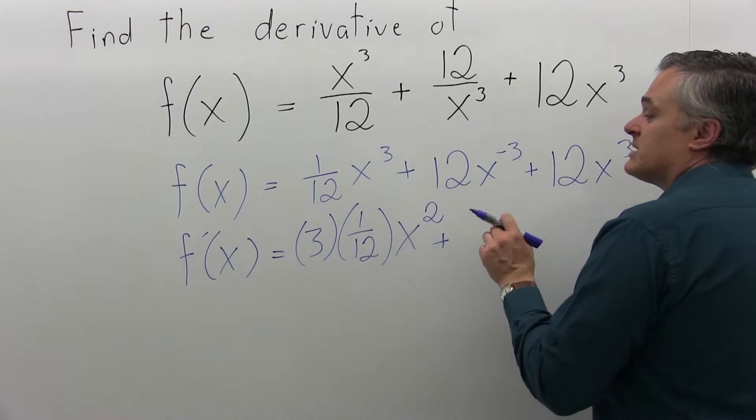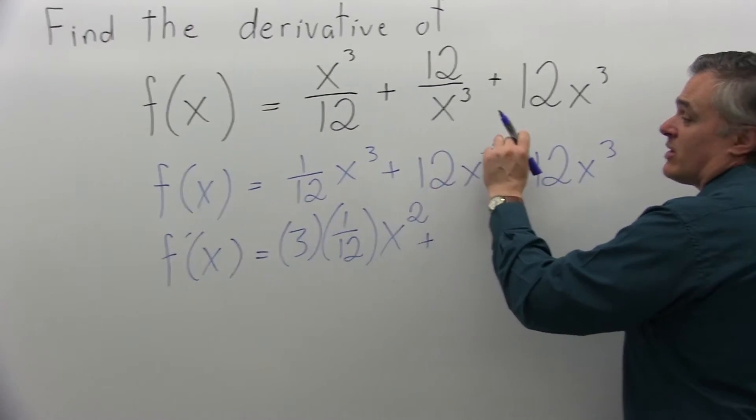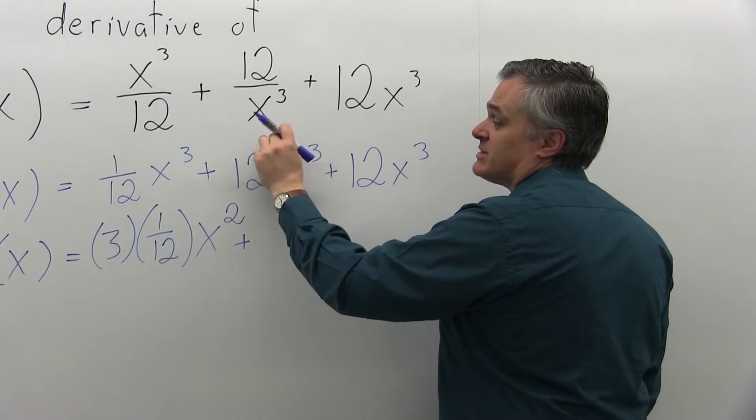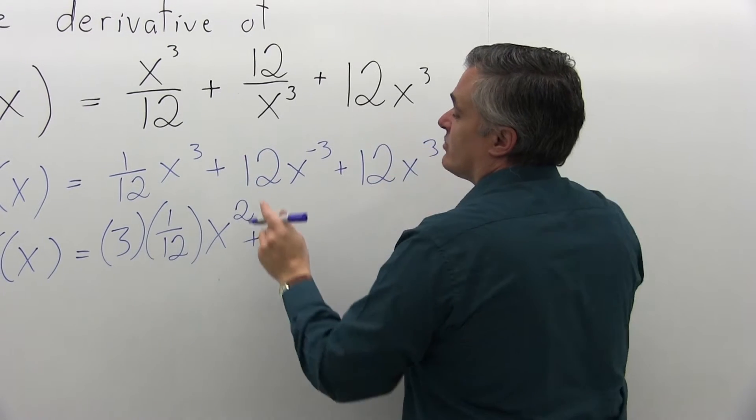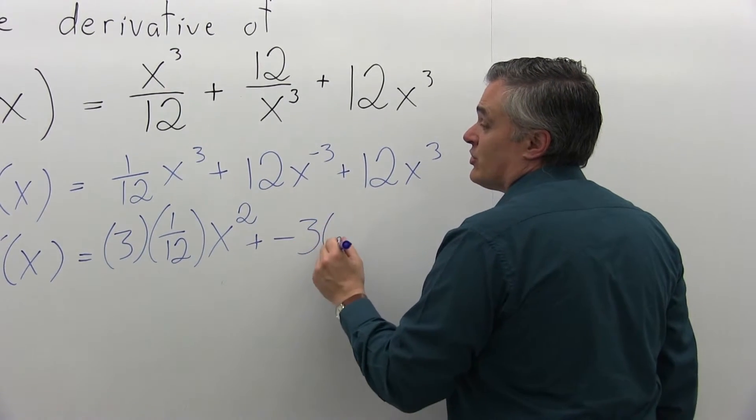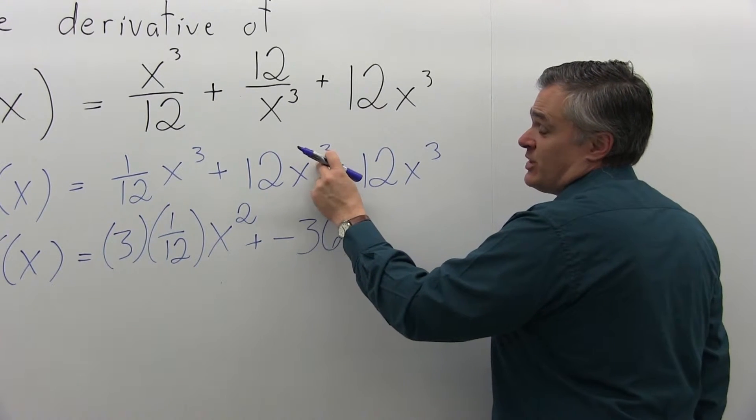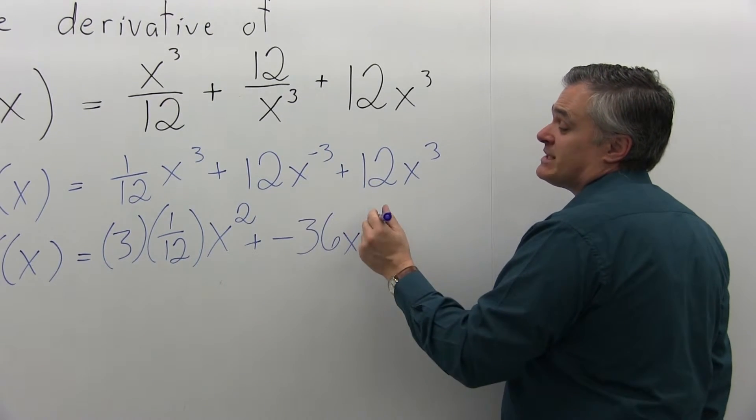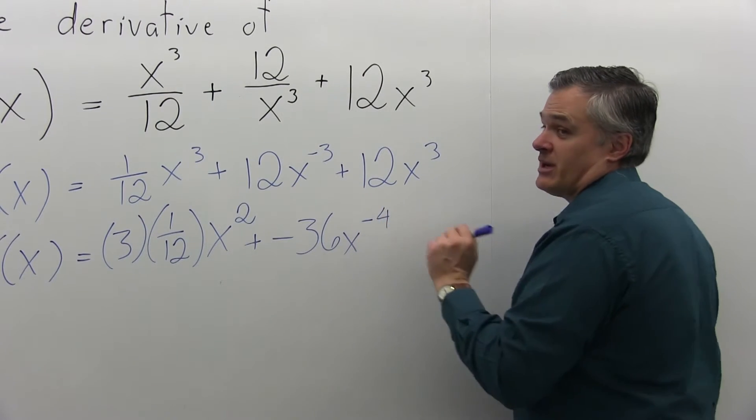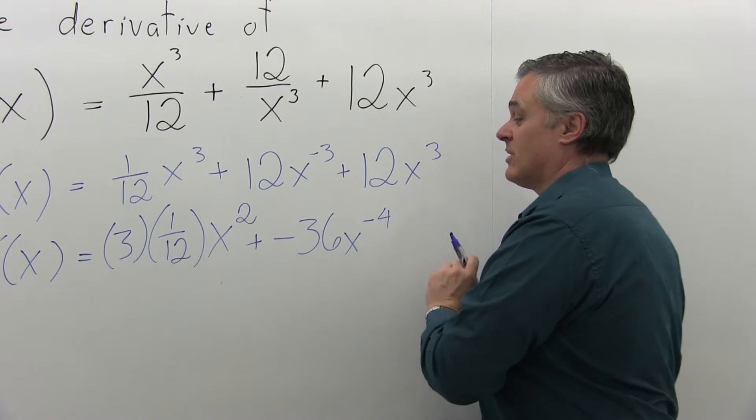Now the next piece in the middle, 12x⁻³, the exponent of negative three will come down times the number in front times the 12. So negative three times 12 is negative 36x to the one less power. So negative three, one less power is negative four. Pay attention, it's not negative two. That would be one more power. Negative three minus one is negative four.